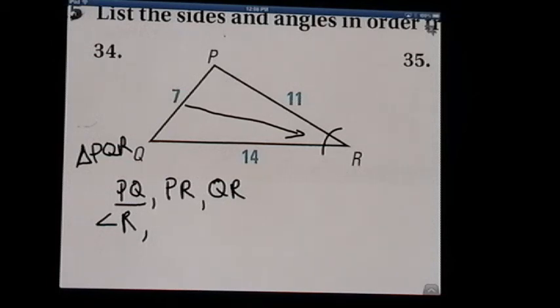So since PQ is missing R, we know it's angle R. And with PR, the Q is missing. So angle Q is next larger. And then QR, the missing letter is P, so angle P is the last angle.